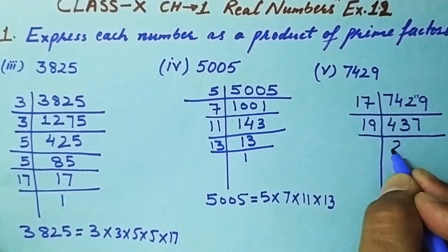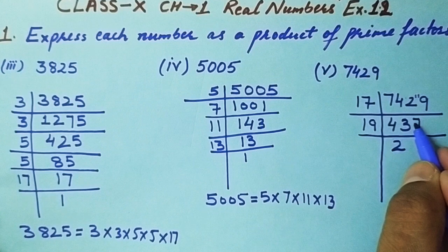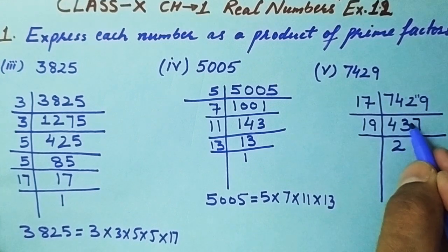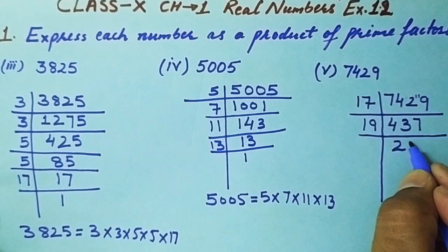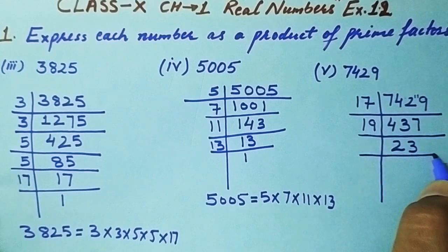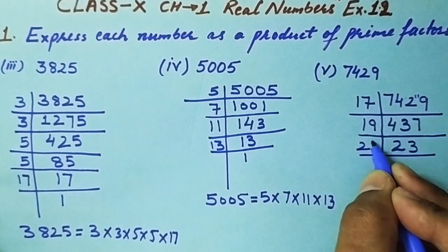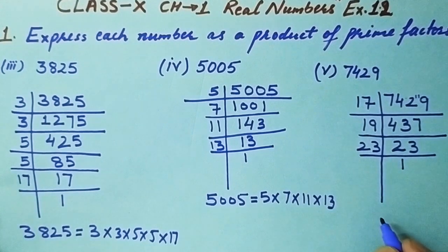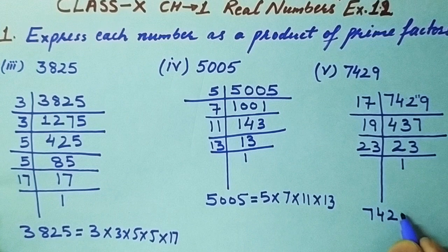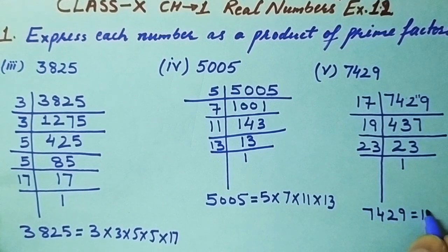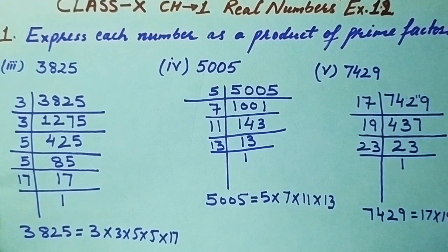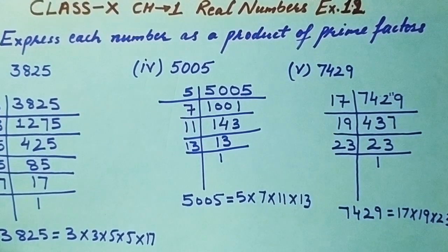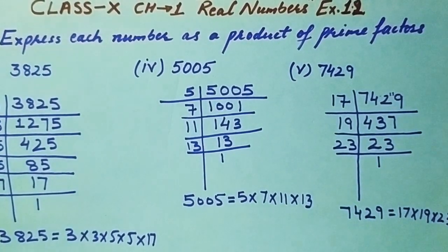Dividing 437 by 19: 19 × 23 = 437. Now 23 is itself a prime number. So the prime factorization of 7429 is 17 × 19 × 23. This is how we can solve this question. Thanks for watching.